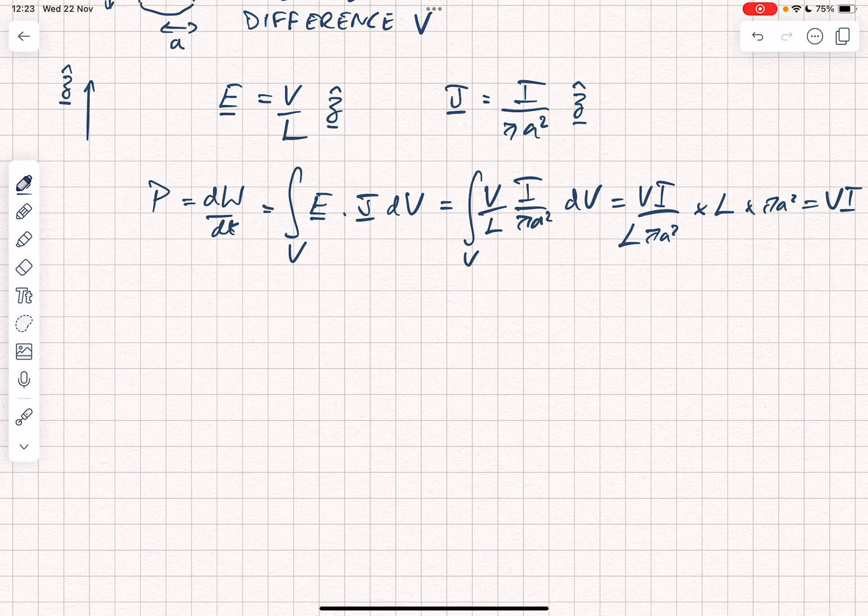Now let's turn to the fields and the Poynting theorem. We've already said that E is equal to V over L in the Z direction. What about the magnetic field?